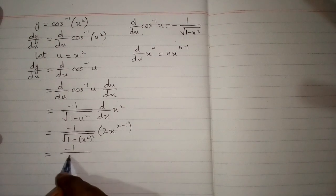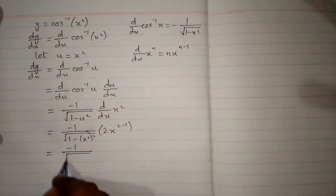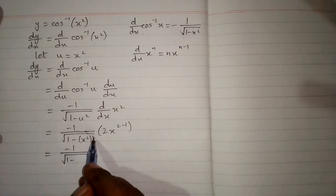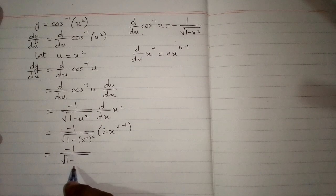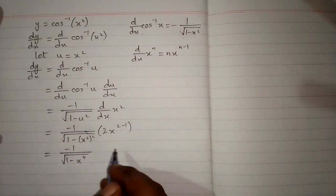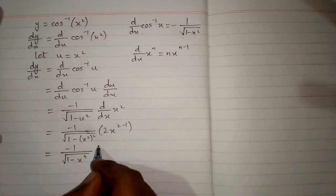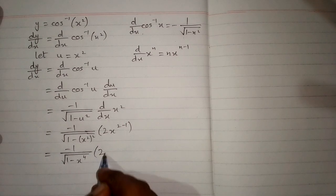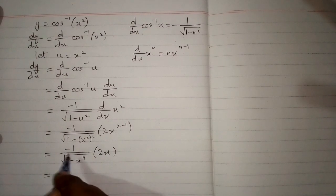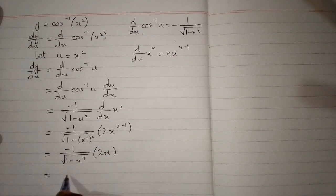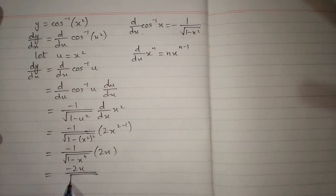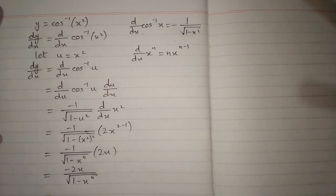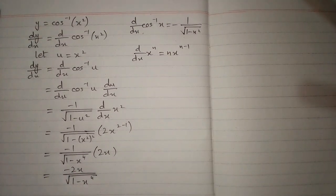Now minus 1 upon square root of 1 minus the square of x square gives 1 minus x to the power 4. And x to the power 2 minus 1 is 1, so we have 2x. Multiplying minus 1 by 2x, we get minus 2x upon square root of 1 minus x to the power 4. And this is the required answer.